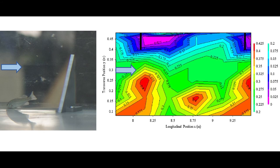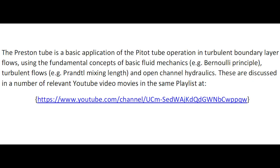In this case, on the left, a juvenile silver perch resting upstream of a bottom corner. The Preston tube is a basic application of the Pitot tube operation in turbulent boundary layer flow, using the fundamental concepts of basic fluid mechanics, turbulent flow, and open channel hydraulics. These are discussed in a number of relevant YouTube video movies in the same playlist.